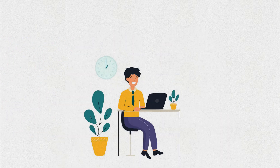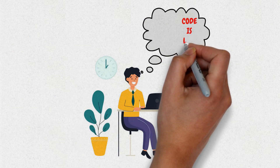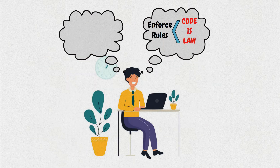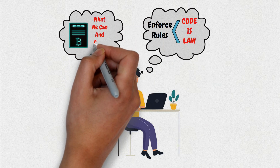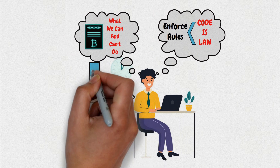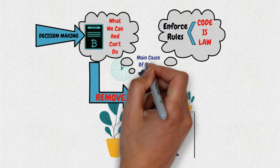Some may even have heard of the expression 'code is law,' which means the technology is used to enforce rules. Basically, the code dictates what we can and cannot do. The smart contract's aim is to remove the human factor from the decision-making, which is often proven to be the main cause of errors.